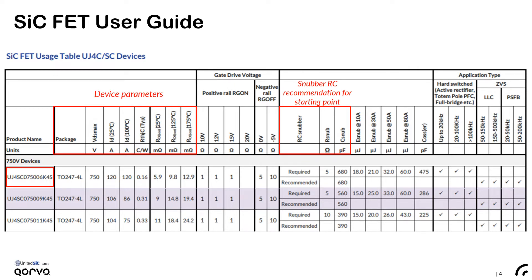For example, for the 6 mΩ 750V Gen4 device, which is the first row, we require a snubber for hard switching and a starting RC value is provided. But for the same device in soft switching, we only recommend snubber capacitance, so there is no snubber resistor in series. And this device is good for all hard and soft switching applications listed here.